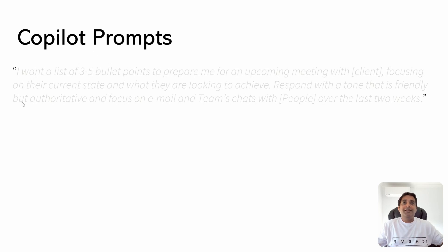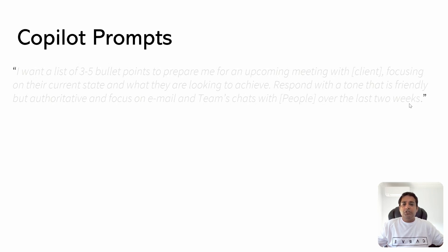Here on your screen, you can see an example of a particular prompt which says: I want a list of three to five bullet points to prepare me for an upcoming meeting with some client, focusing on their current state and what they are looking to achieve. Respond with a tone that is friendly but authoritative and focus on email and Teams chat with some people over the last two weeks. So it is elaborative. Let's just see what are those four parts that you can utilize or consider as a template while you are using prompts in Copilot.